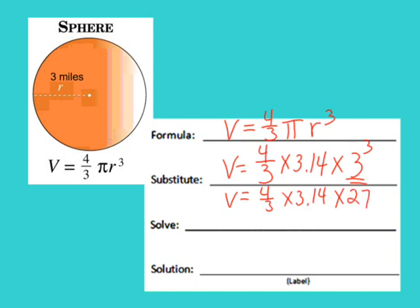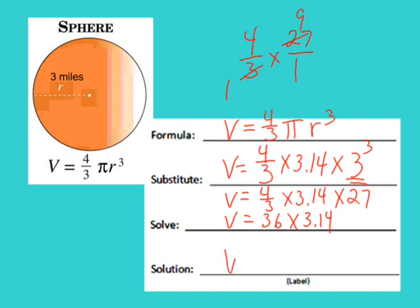Next I'll multiply four-thirds times 27. I can cancel these: four-thirds times 27 equals 36. Then I do 36 times 3.14 — remember, the order of multiplication doesn't matter. The volume of this sphere is 113.04 cubic miles.